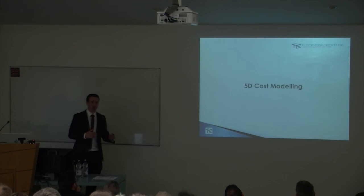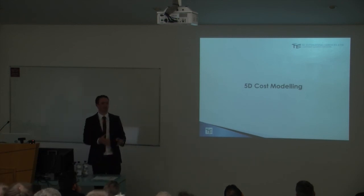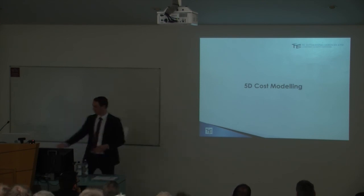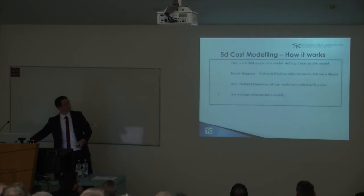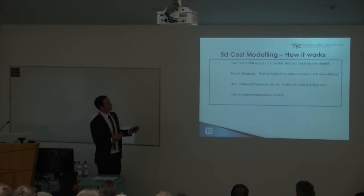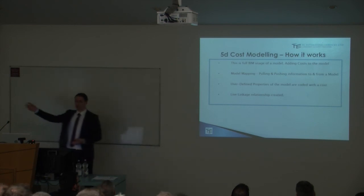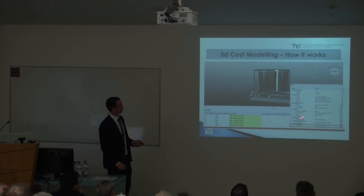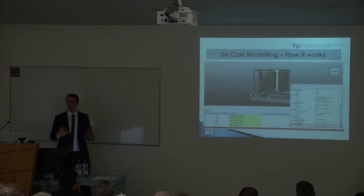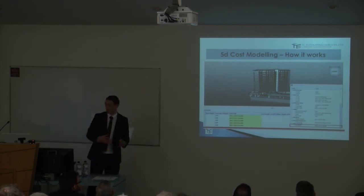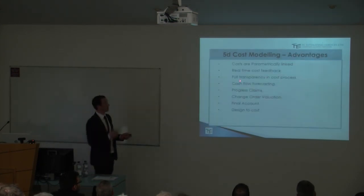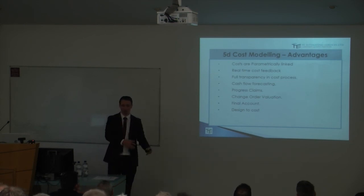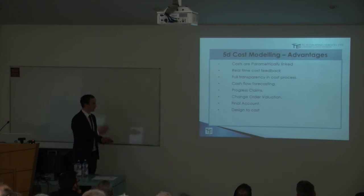Quickly on to 5D. I very much have an approach that you need to crawl first, then walk, then run. For quantity surveyors, the 3D quantity extraction is your first step — you don't move on to anything to do with 5D until you've mastered that process. With 5D, you're using the full model and adding cost to it. The information we extracted about the wall — we literally add a cost code onto it and put in how much that concrete costs, then send it back into the model. So the costs are parametrically linked and we get real-time cost feedback. If the architect omits part of a wall, he sees the revised cost straight away, without having to send it to the QS to update it.